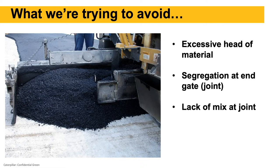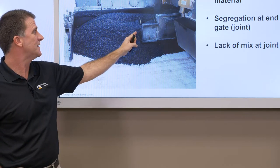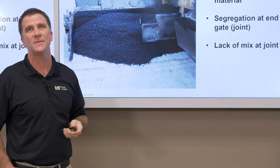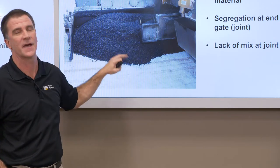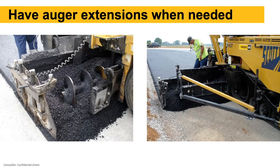An excessive head of material is what we're trying to avoid. In this picture, the main reason is the setup doesn't have the proper amount of auger extension going from the screed all the way out to the end gate. On a front mount screed, the auger should be within about 18 inches of the end gate or paving width. Without proper auger extension and mainframe tunnels, we'll end up with a lot of segregation as well as that big head of material causing the screed to rise and fall.